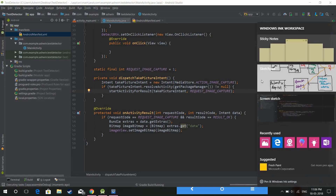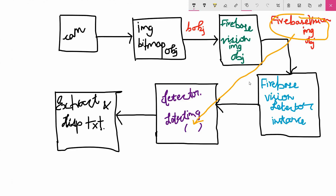While the file is building, let me explain what we're going to do in this tutorial. We're going to grab an image from the camera, then convert that image into a bitmap object. Then we're going to pass that bitmap object into a FirebaseVisionImage object — that means we're going to create a FirebaseVisionImage object by passing the bitmap into an instance of that class.